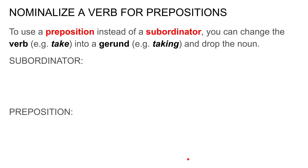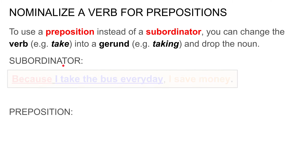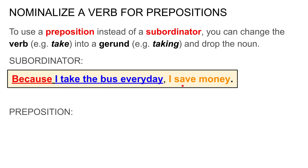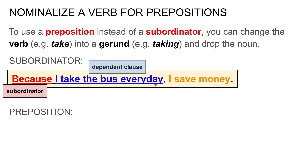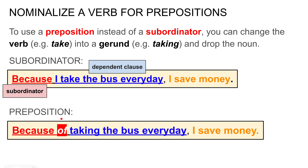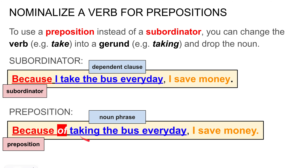Let's talk about how to nominalize a verb to use prepositions. To use a preposition instead of a subordinator, you change the verb — such as 'take' — into a gerund — such as 'taking' — and drop the subject. For example, with a subordinator: 'Because I take the bus every day, I save money.' 'Because' is the subordinator, and 'I take the bus every day' is the dependent clause. But if I want to use a preposition, I drop the subject 'I' and change the verb 'take' to the gerund 'taking': 'Because of taking the bus every day, I save money.' So I have the preposition 'because of,' followed by the noun phrase 'taking the bus every day,' using a gerund.